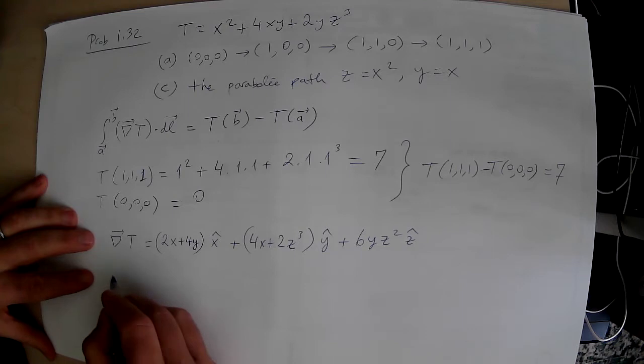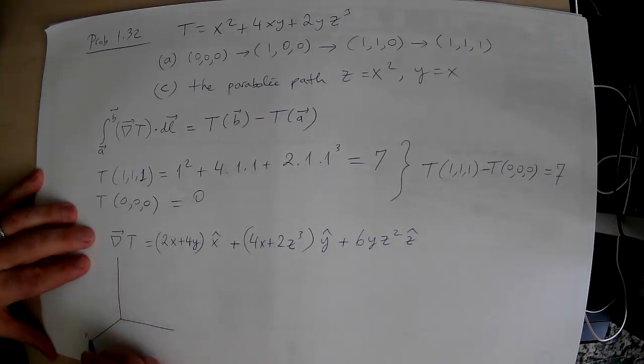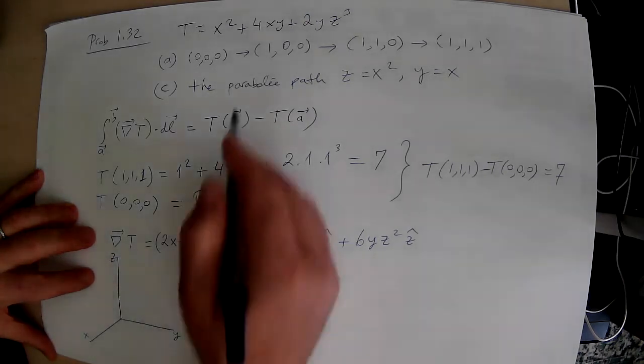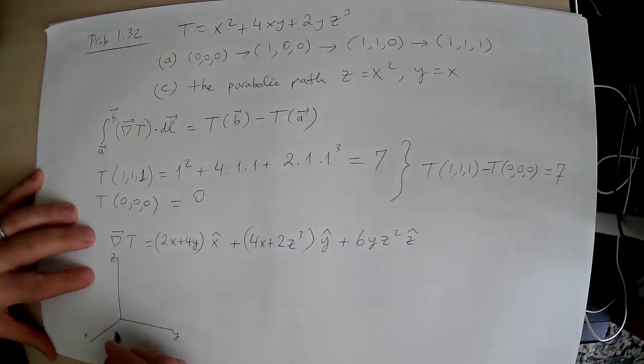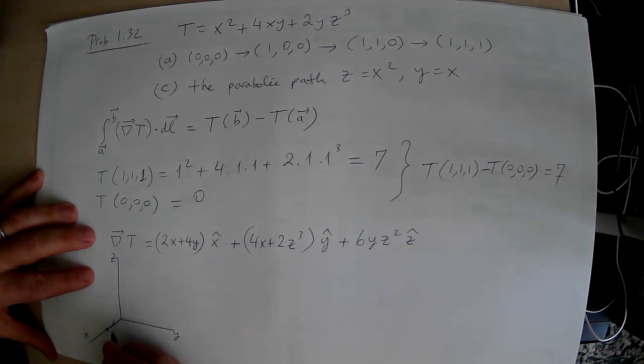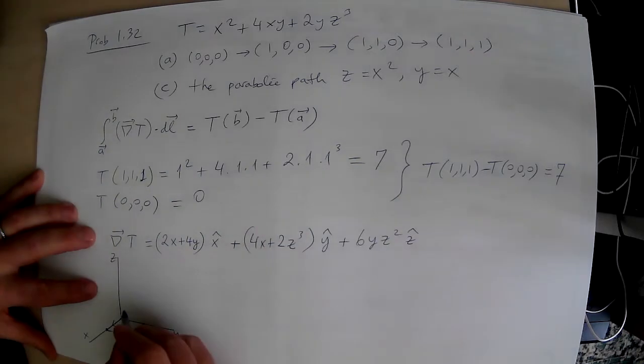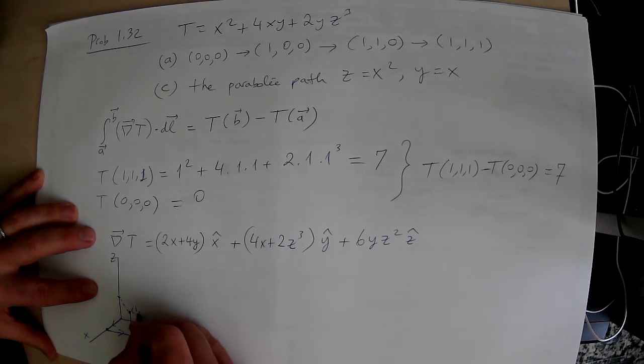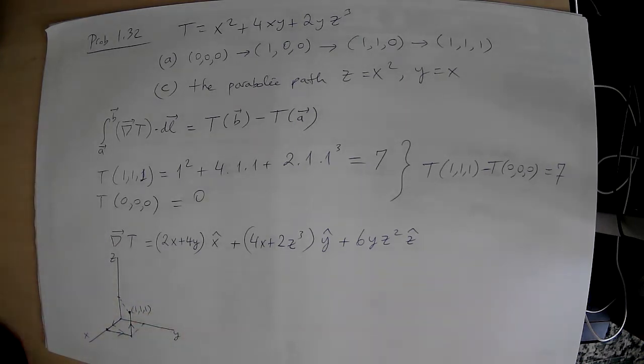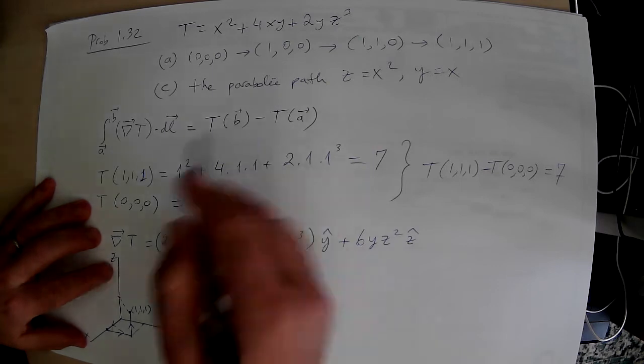So now, let me quickly draw what we have here in part A. This is x, this is y, this is z, from (0,0,0) to (1,0,0). So that's where I'm going to go first. And then to (1,1,0), which is here, go here. And then to (1,1,1), which I will go up here. So that's my endpoint, (1,1,1). So now we have three segments.